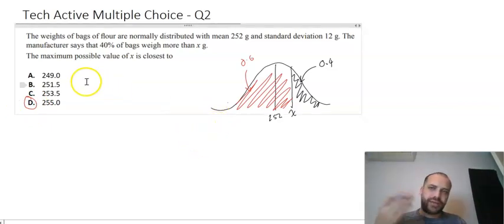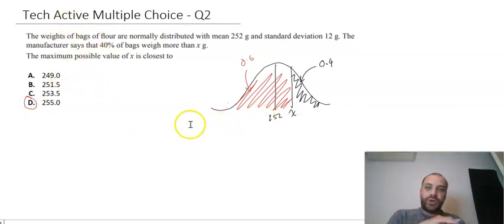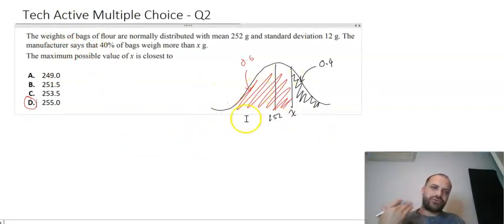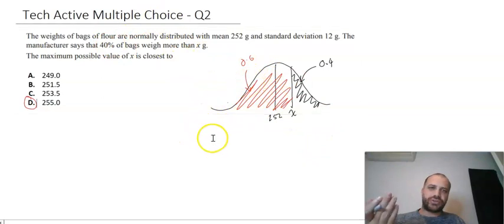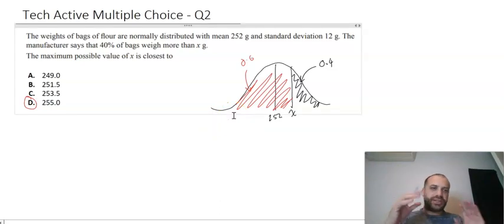The thing that I probably want to say here is that even though it's a multiple choice question and you don't get any marks for any kind of working, I really think if you're not drawing pictures for these normal distribution things, you're probably going to get them wrong. So spend the extra time, it's only 10 seconds, to draw a picture and get an idea of what you're dealing with.